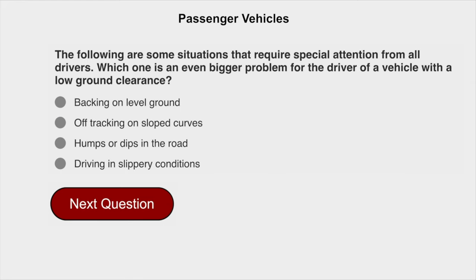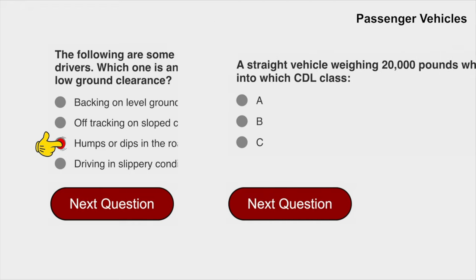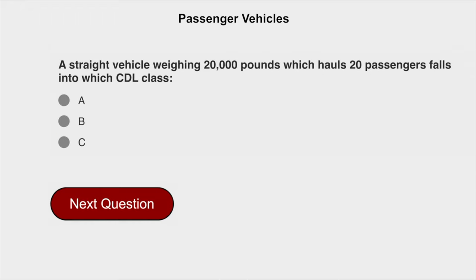The following are some situations that require special attention from drivers. Which one is an even bigger problem for the driver of a vehicle with a low ground clearance? Humps or dips in the road. A straight vehicle weighing 20,000 pounds which houses 20 passengers falls into CDL class C.